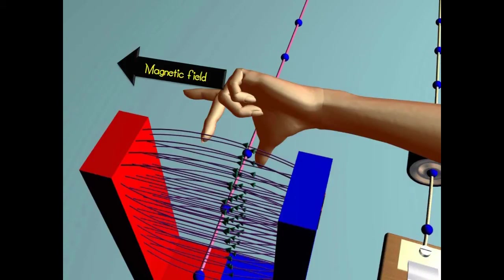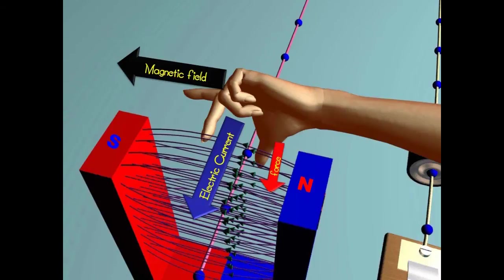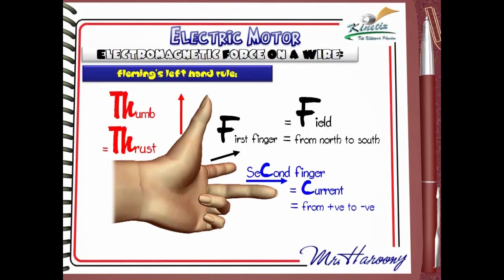...and the second finger points in the direction of the conventional current, which flows from positive to negative, then the thumb will show the direction of the force that pushes the wire. This is not enough to understand it perfectly — lots of examples are needed. With much patience, I hope you have some.